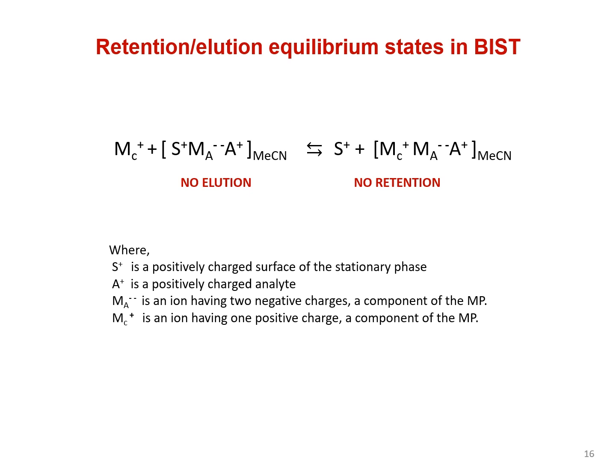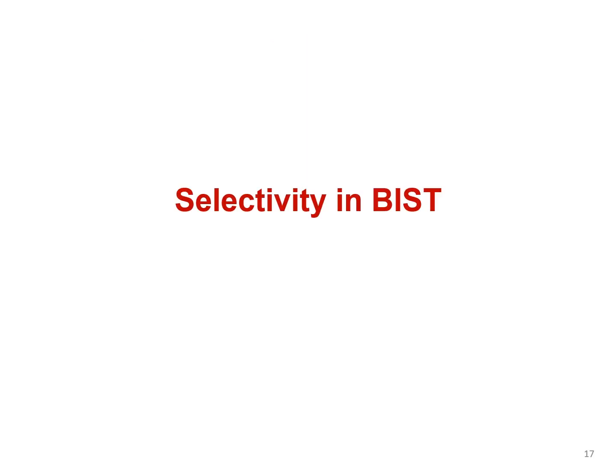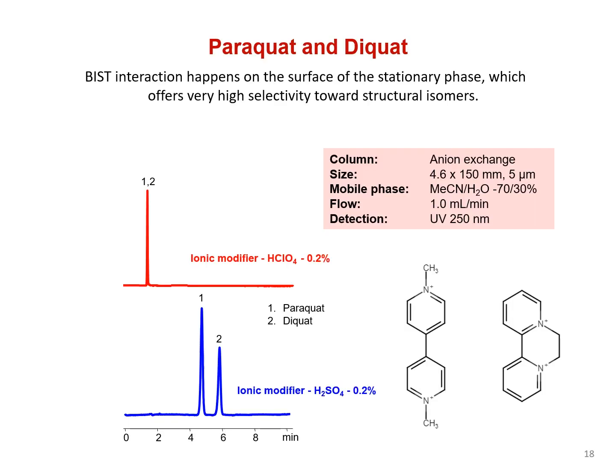This leads to a reduction in retention. As we have already demonstrated, the degree of the analyte's retention in BIST strongly depends on the number of charges in the analyte ion. How might other factors affect retention? A molecule's geometry and its charge position, as well as other characteristics of the ions, can be contributing factors in the retention of analytes as well. This allows for high selectivity to be achieved in the separation of similarly structured molecules.